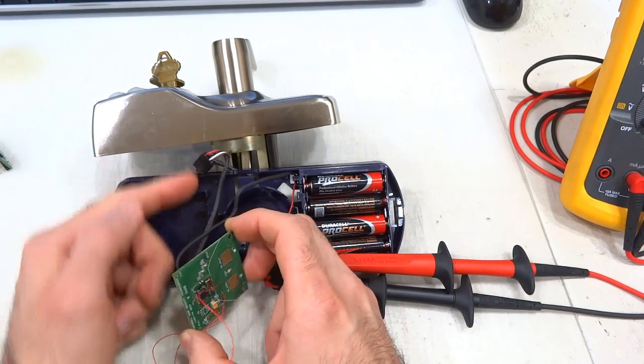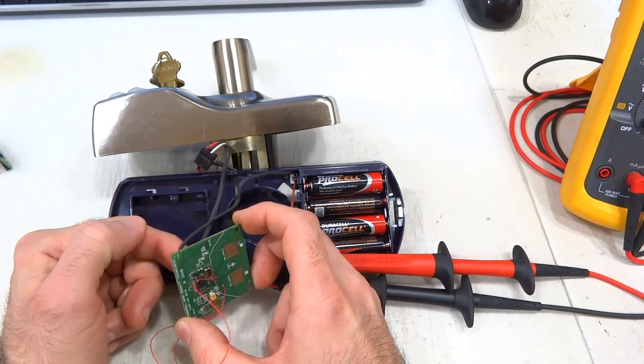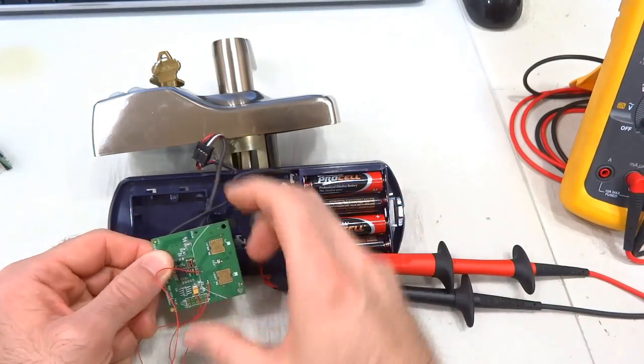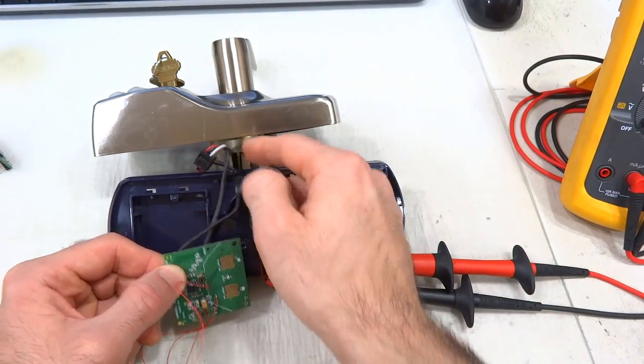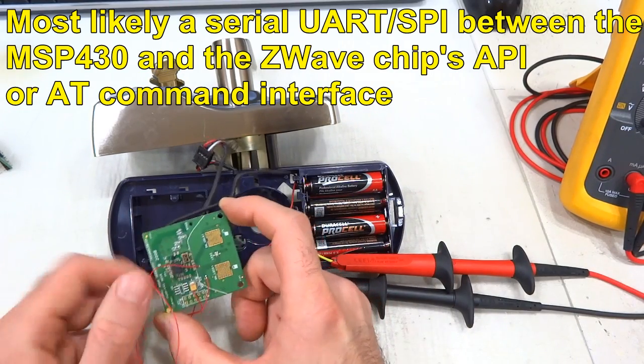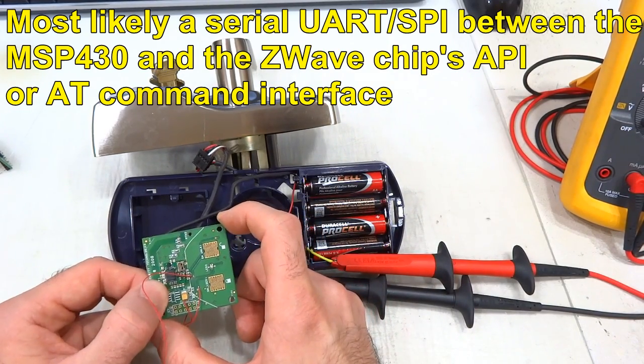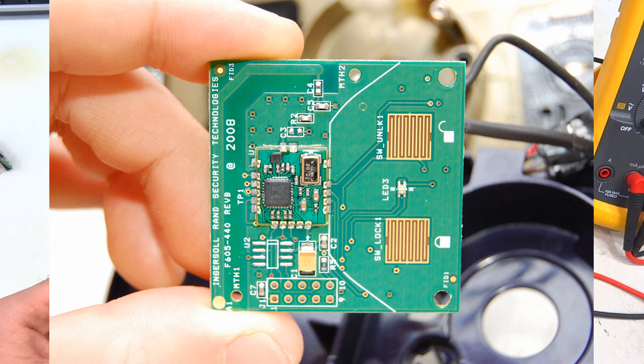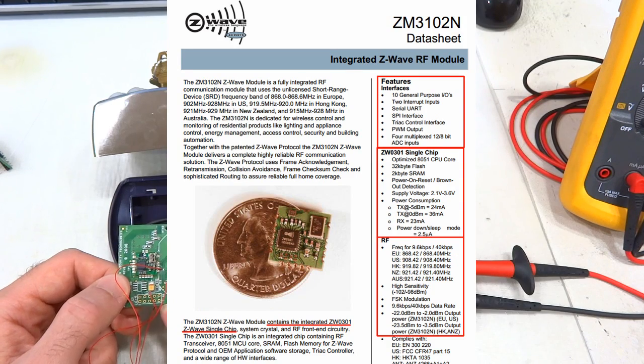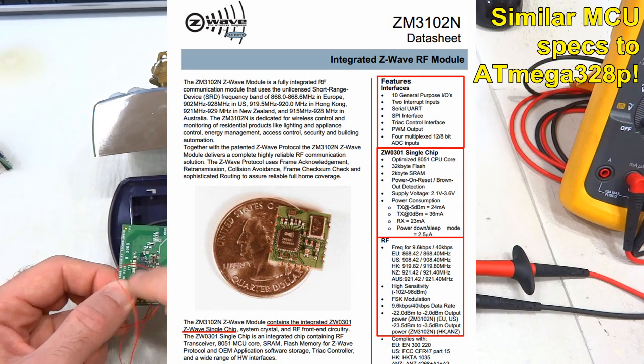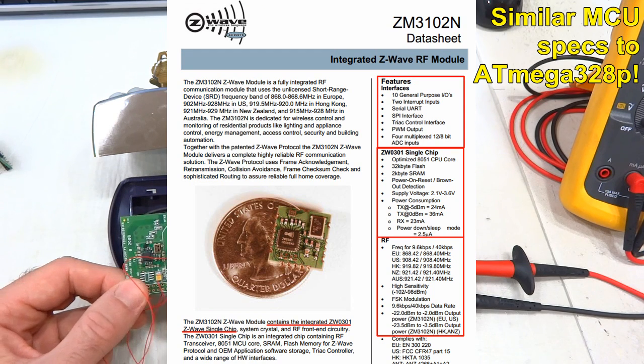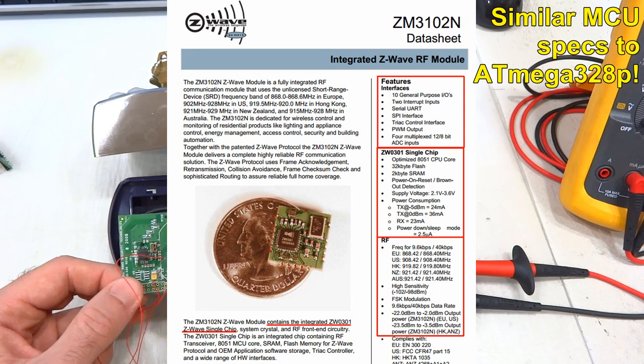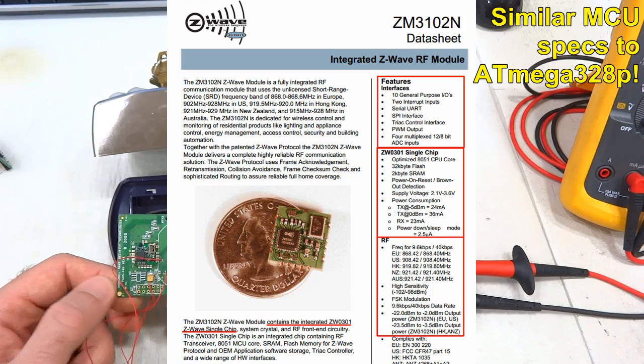That communicates through a couple of wires that provide power from the battery pack and also two signals that go to this Z-Wave ZW0301 system on chip. That has an 8051 microcontroller and a 908 megahertz transceiver. It's all on that small circuit which you have to get licensed to use, license from Z-Wave that is.